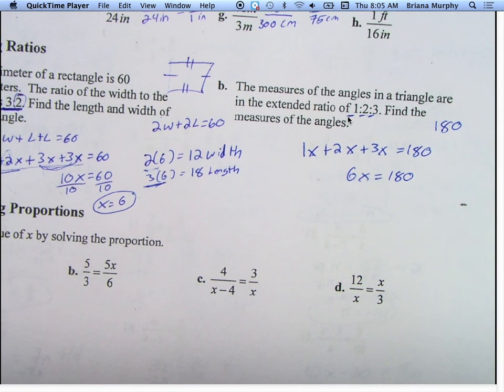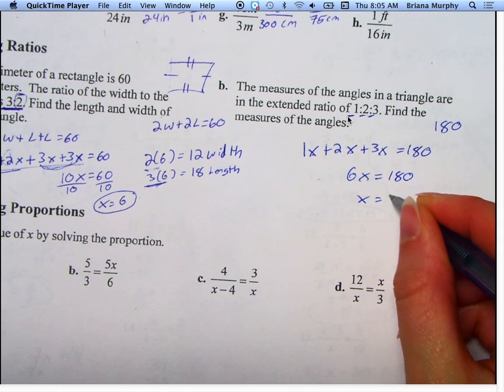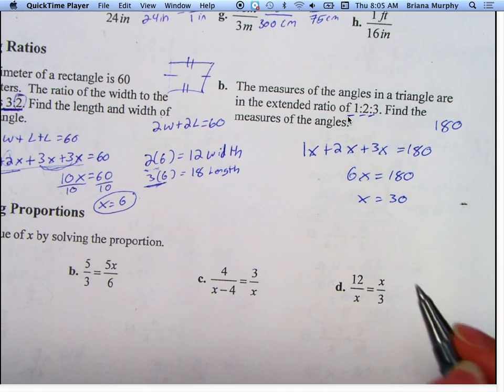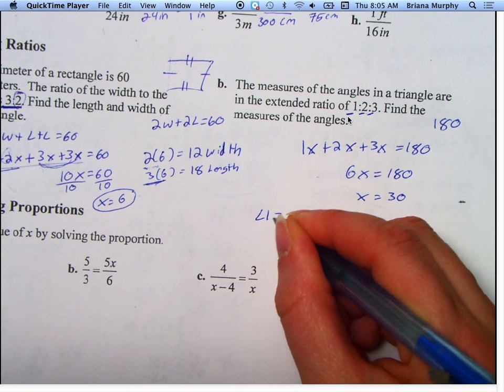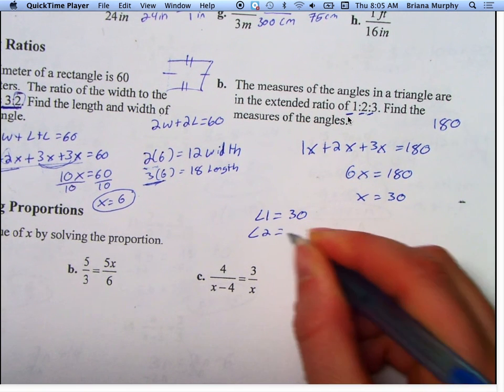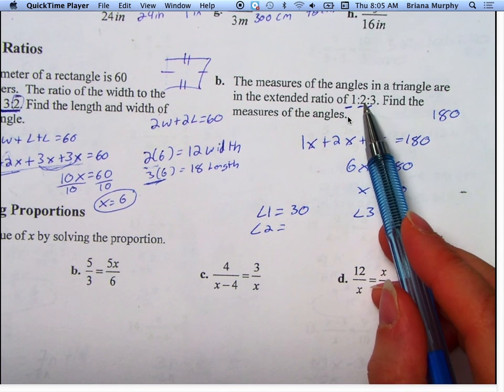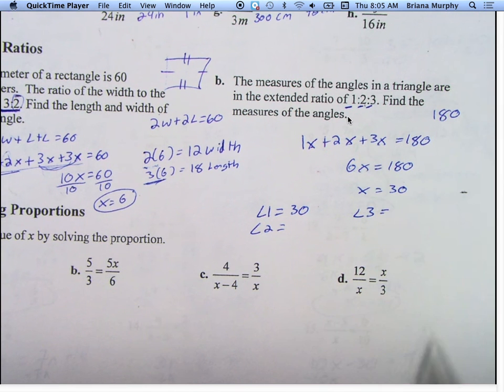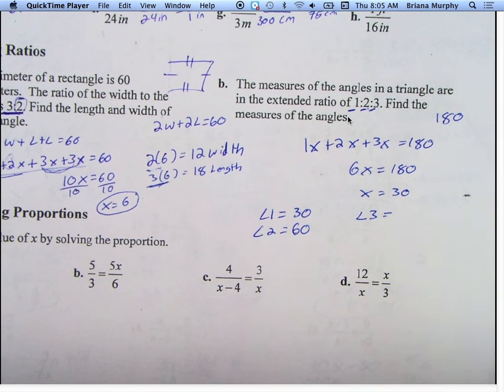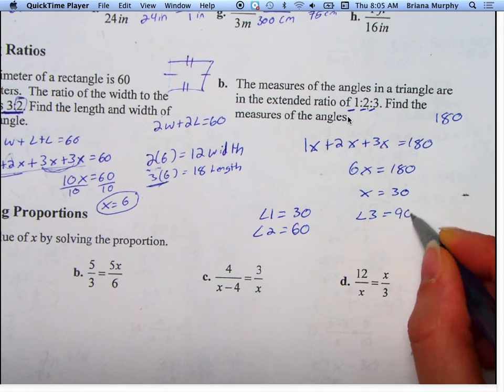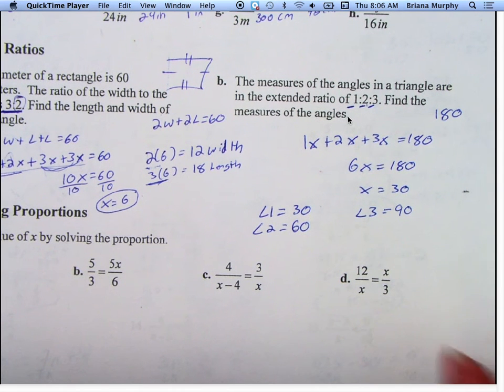So 1 plus 2 plus 3 gives me 6x equals 180. I take 180 and divide it by 6 and I get x equals 30, so that's angle 1. How do I find angle 2 now and angle 3? So my second angle is twice as big as my first, so my second angle would be 60 and my third angle would be 90.